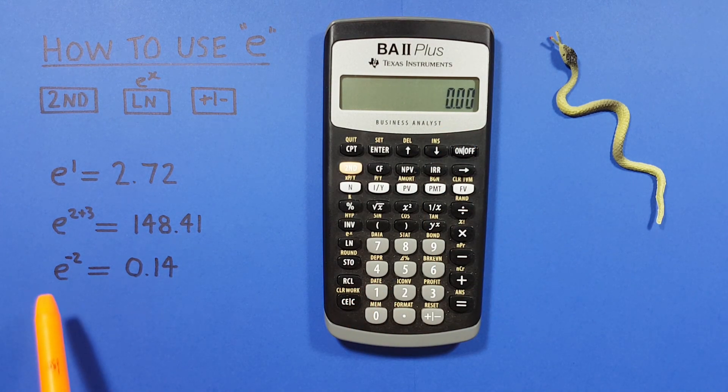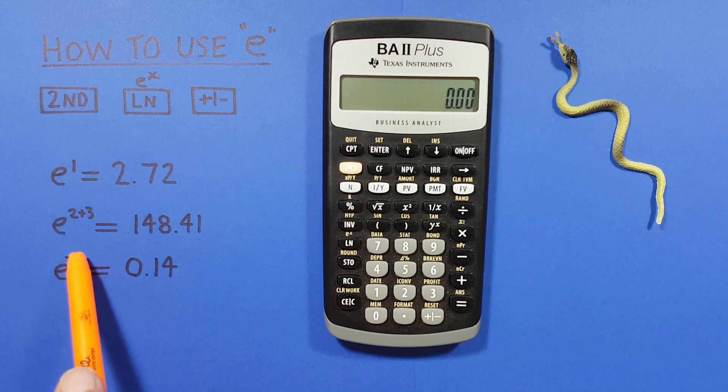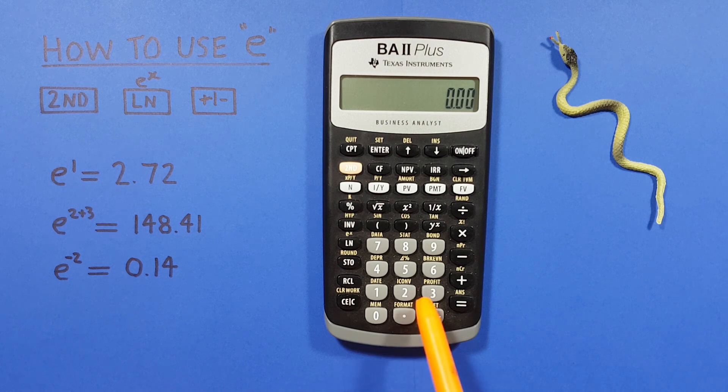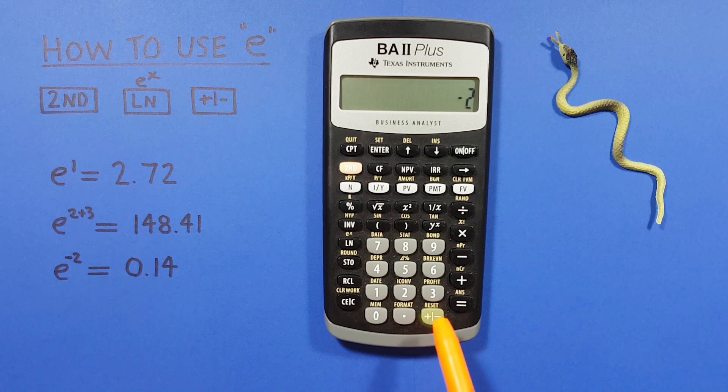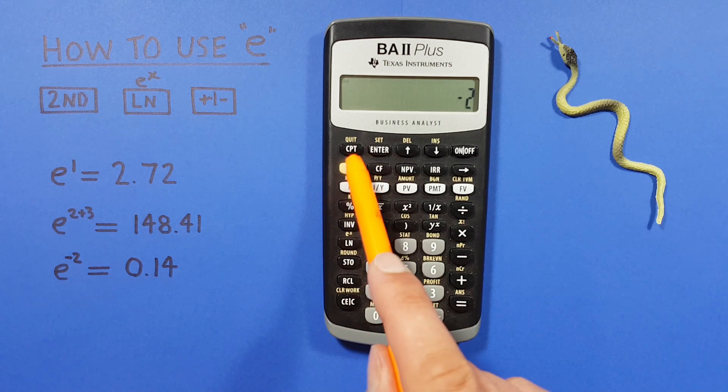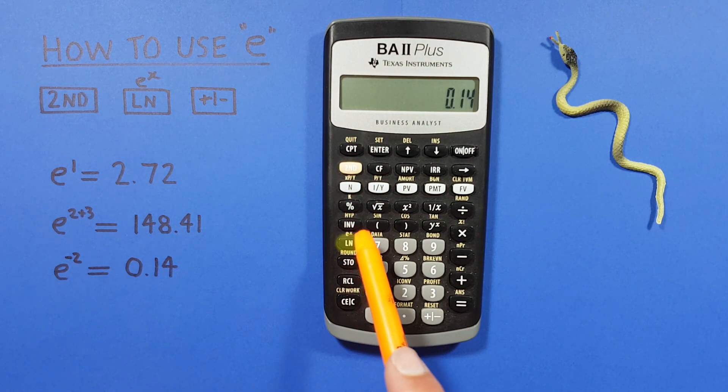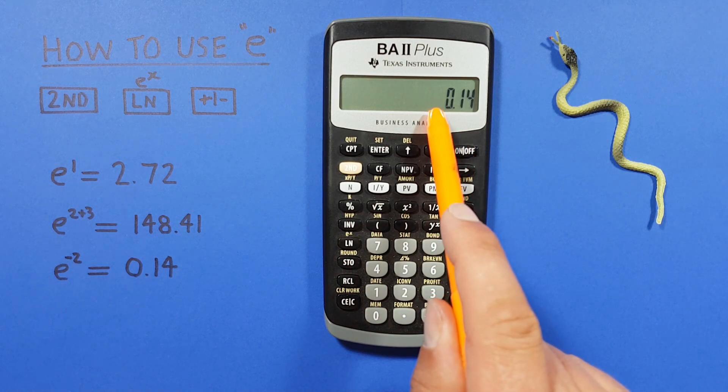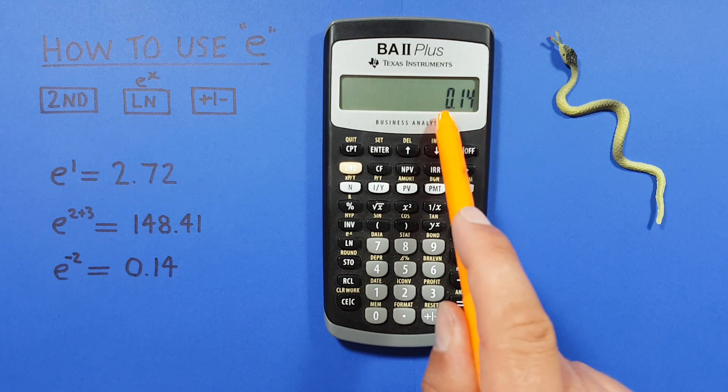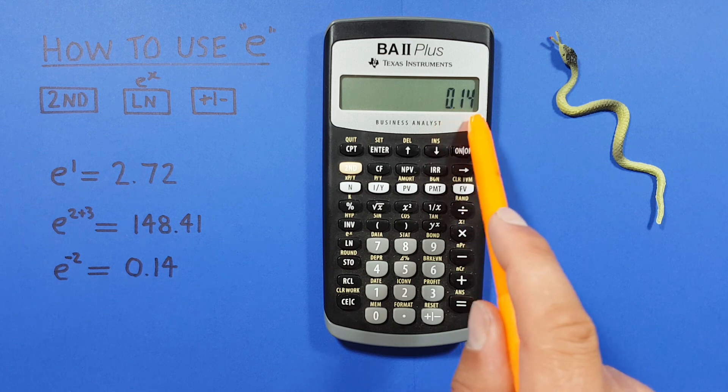We can also do negative exponents like e to the power of negative 2. We start by putting our exponent on the screen, then we tell the calculator this is a negative exponent with the positive negative key. Keep in mind we're not using the subtraction key. Then we go again second LN and we get a result of 0.14, again rounded to two decimal places.